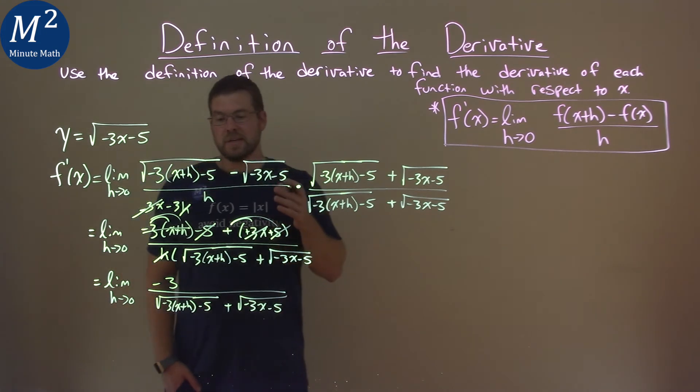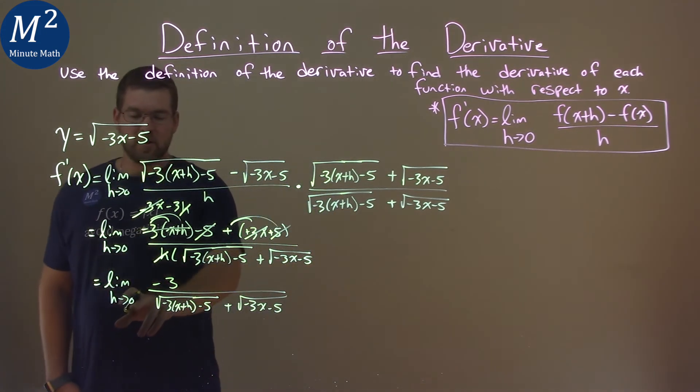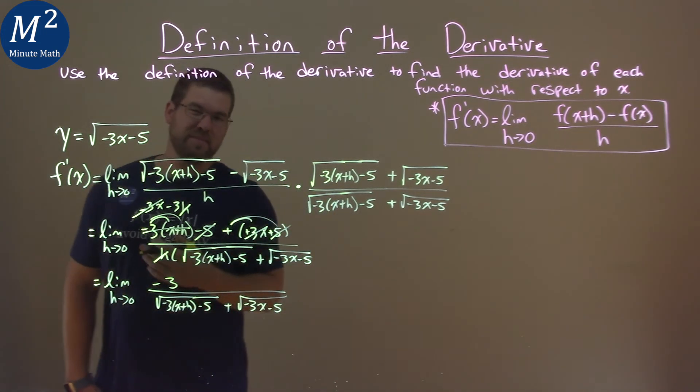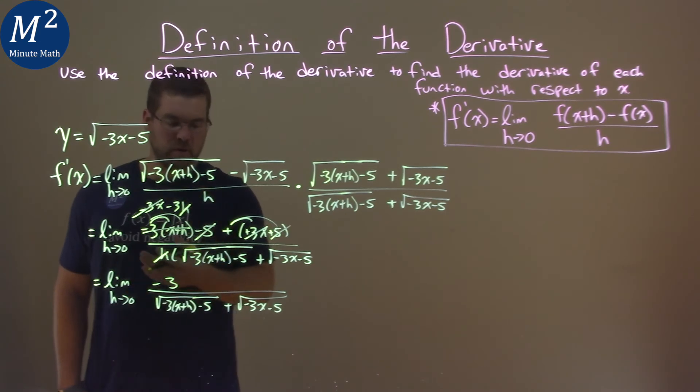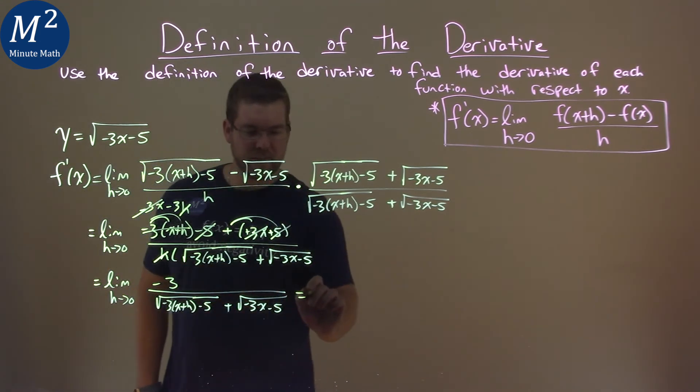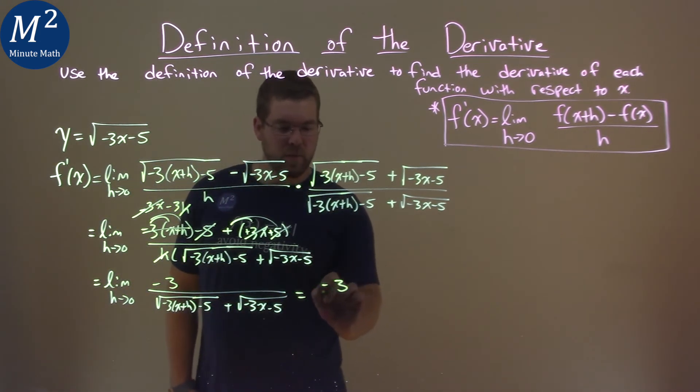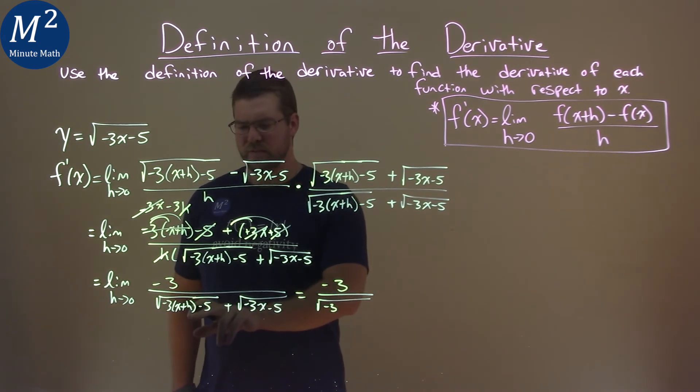And we now can actually substitute directly in our limit as h approaches 0 because it doesn't cause any issues. It's not dividing by 0 or anything. So, to do that, we take the limit here. We have a negative 3 over the square root of negative 3, well, x plus 0.